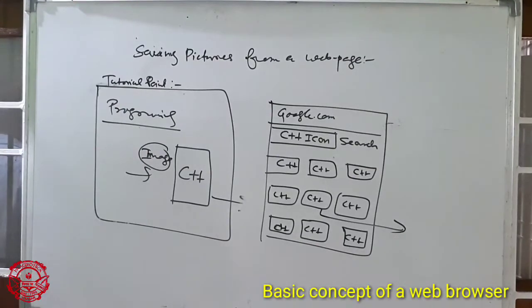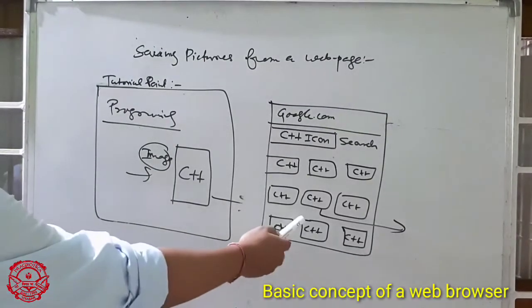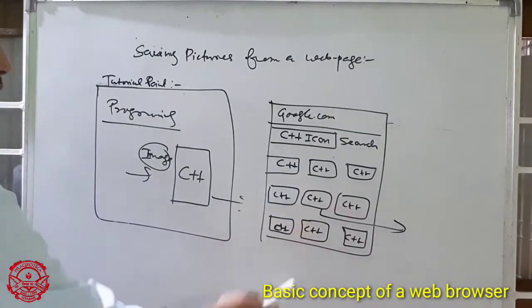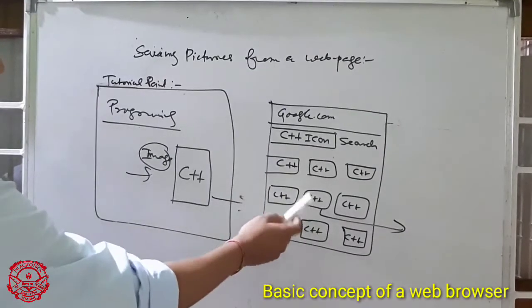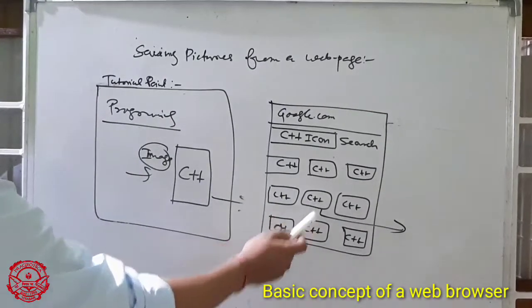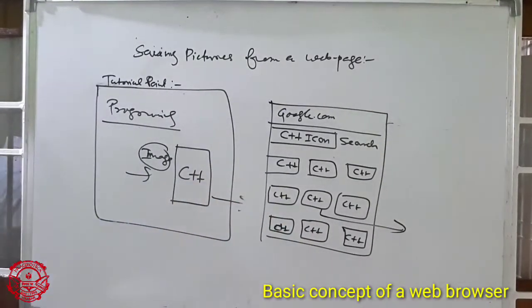Right-click on the item you want to save and then click the save target option — this is the target you want to save, so right-click and select save target options.